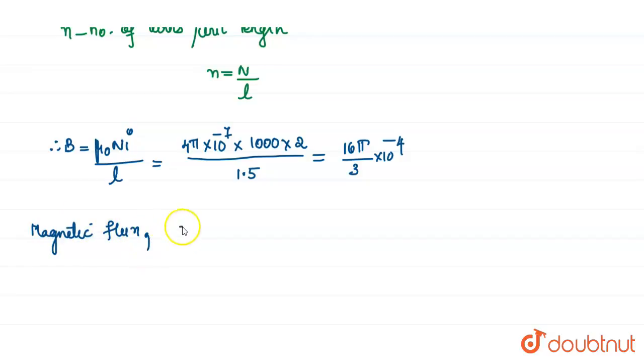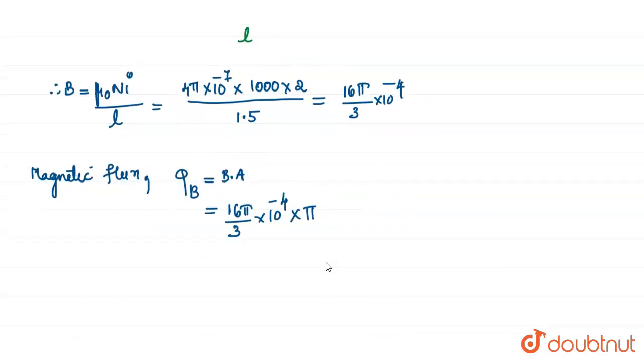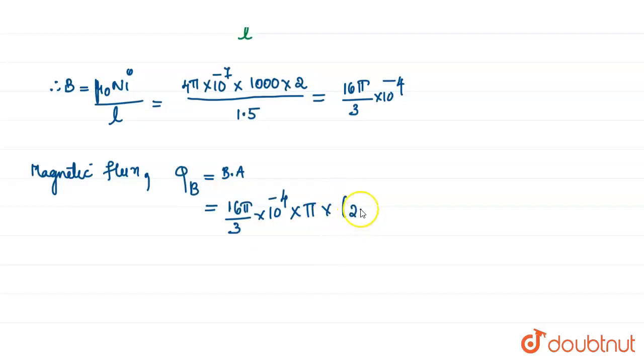Our question is to find the magnetic flux. What is magnetic flux? The equation for magnetic flux is magnetic field into area. Here value of magnetic field is 16π/3 × 10⁻⁴. What is area? It is πr². What is the value of r here? r is equal to 2 × 10⁻², so π × (2 × 10⁻²)². On calculating we get this value is approximately equal to 6.31 × 10⁻⁶.